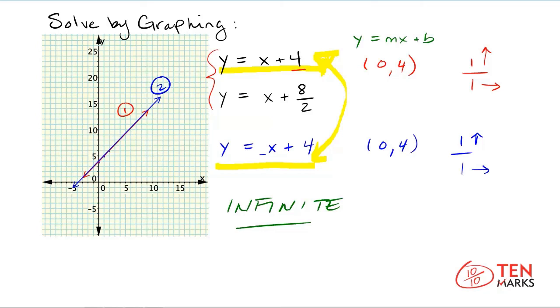You could have seen this earlier. Look at the first equation: y equals x plus four. The second equation, y equals x plus eight over two, simplifies to y equals x plus four — exactly the same equation. The same equation gives the same line, and the same line has infinite solutions. In this lesson, you've learned how to graph systems of equations to find the solution.